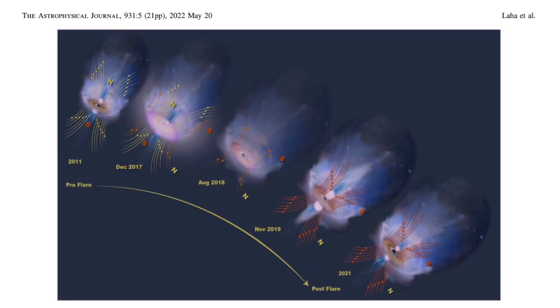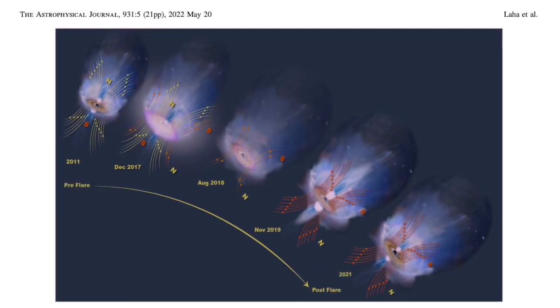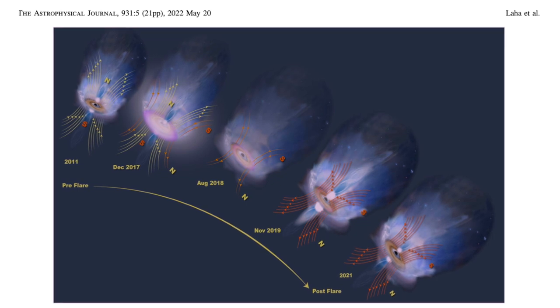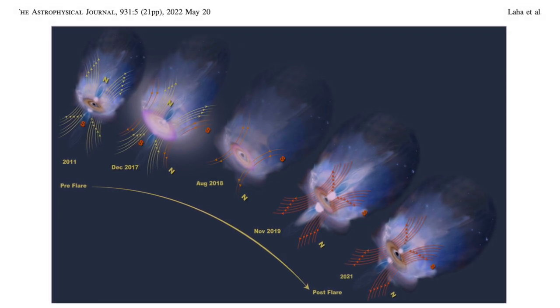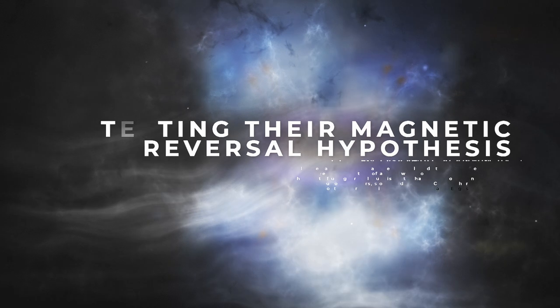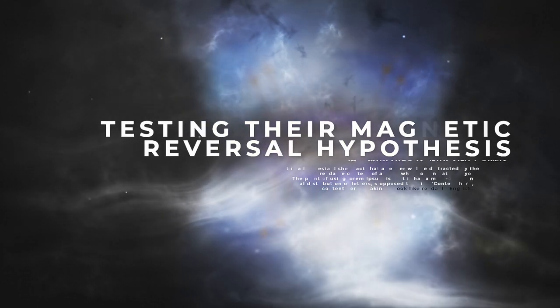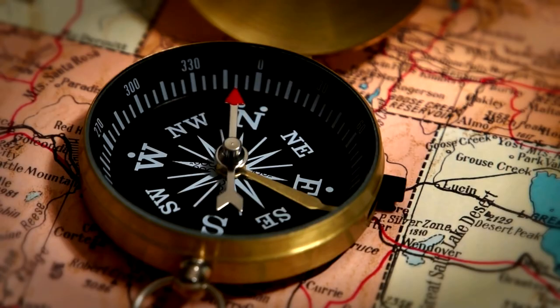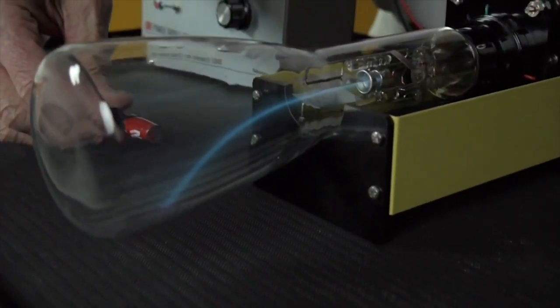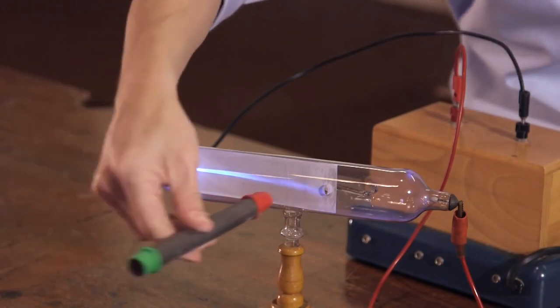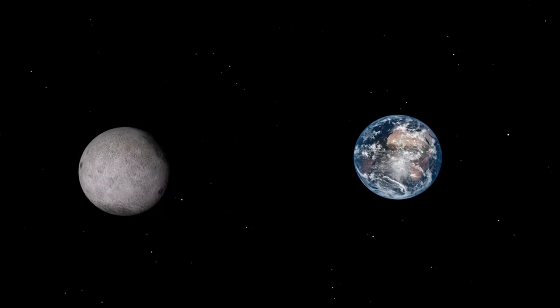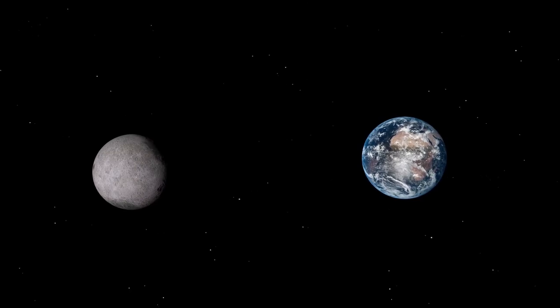Luckily, the researchers are clever and figured out specific key signs that we would expect to see during a magnetic reversal. A magnetic field reversing its orientation is a major event, and thanks to the current understanding of electromagnetics, there is a decent understanding of what would happen if one were to take place.